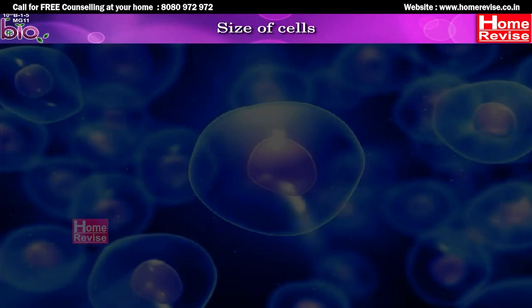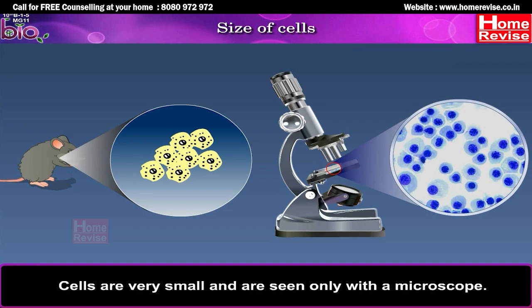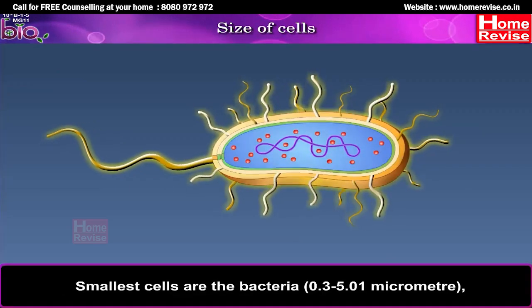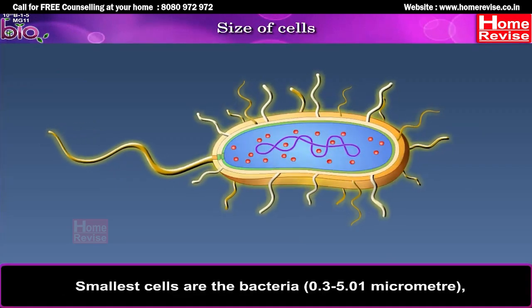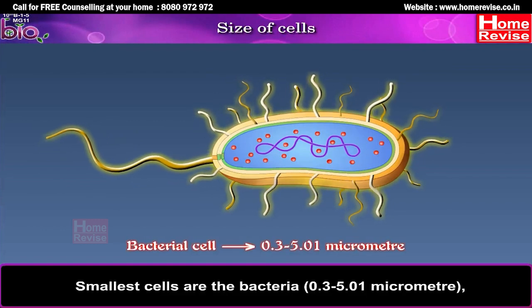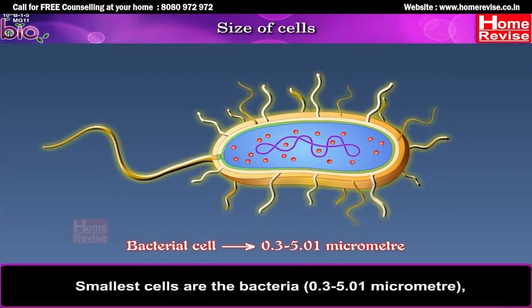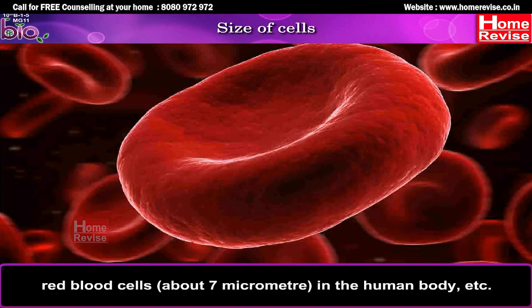Size of cells: Cells are very small and can only be seen with a microscope. The smallest cells are those of bacteria, ranging from 0.3 to 5.01 micrometers. Red blood cells are about 7 micrometers in the human body.